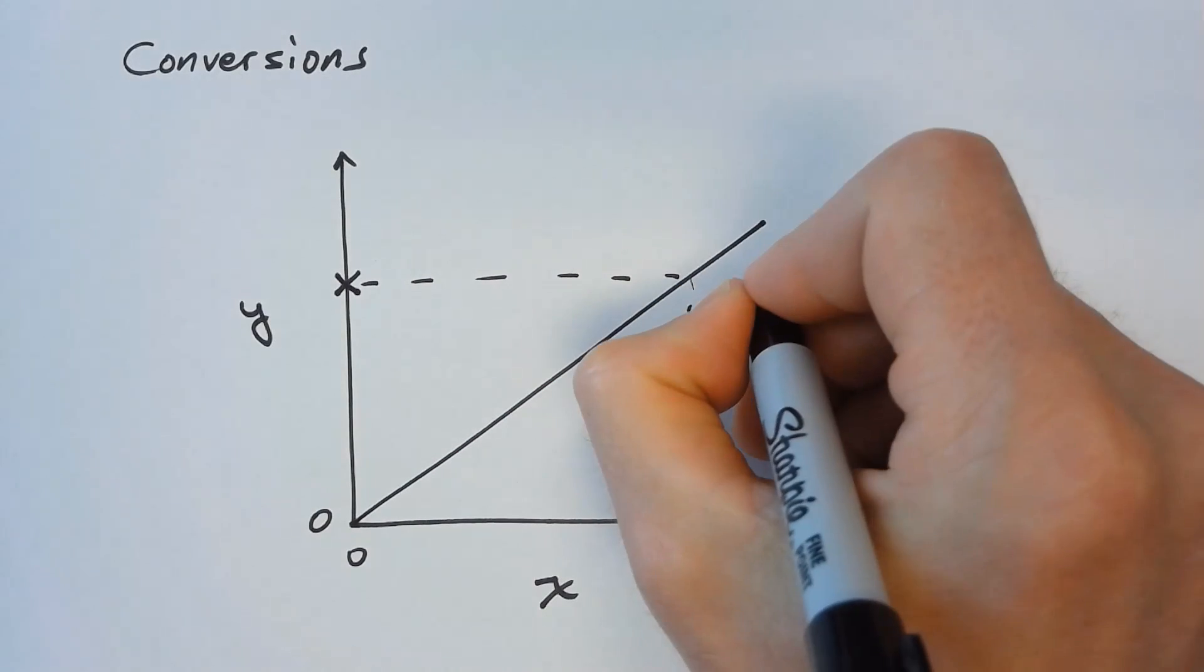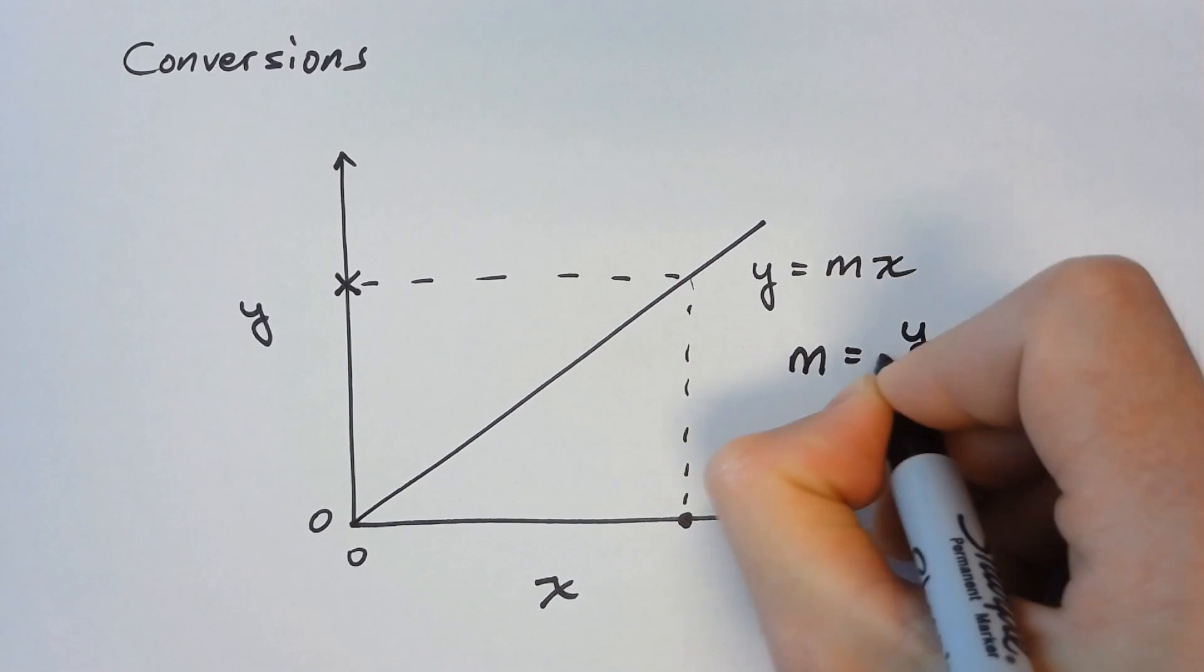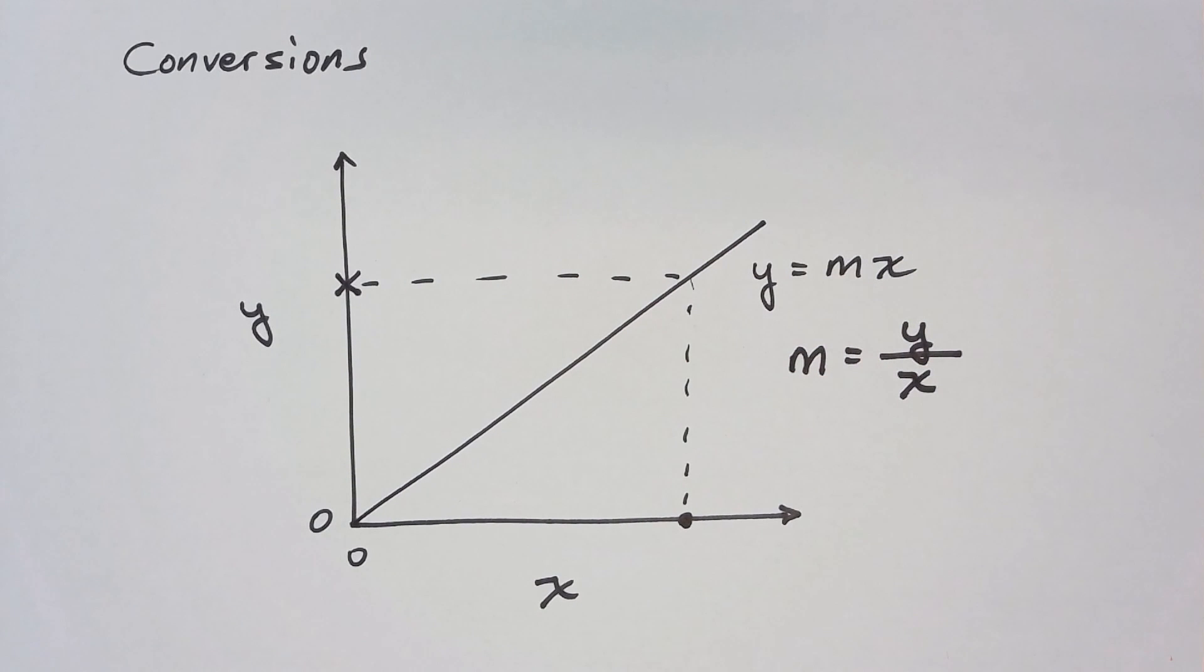Algebraically, this is represented as y equals mx where m is the slope of the line. For straight lines that intersect the origin, the slope is also the ratio y divided by x. Some unit conversions are more complex.